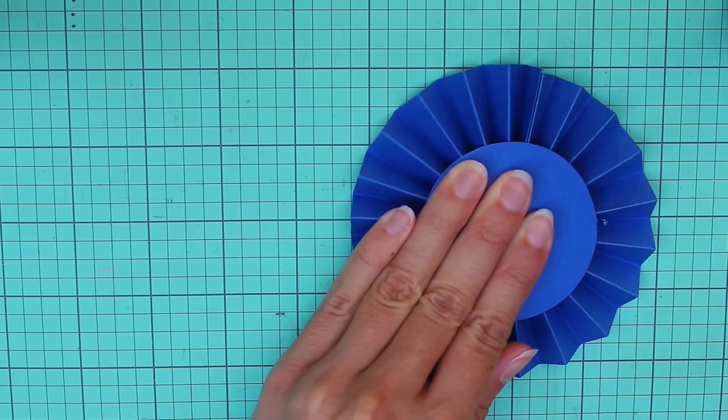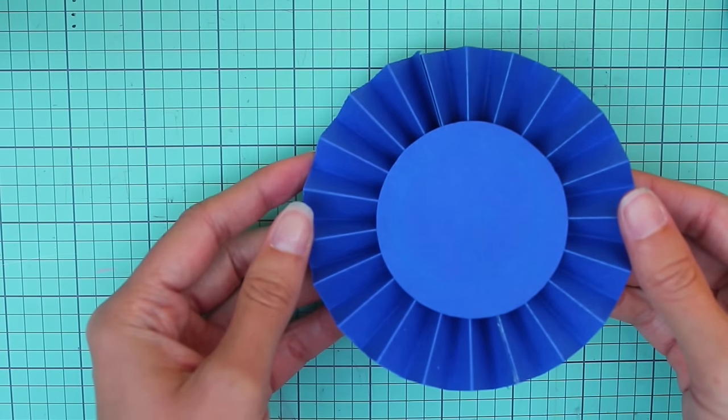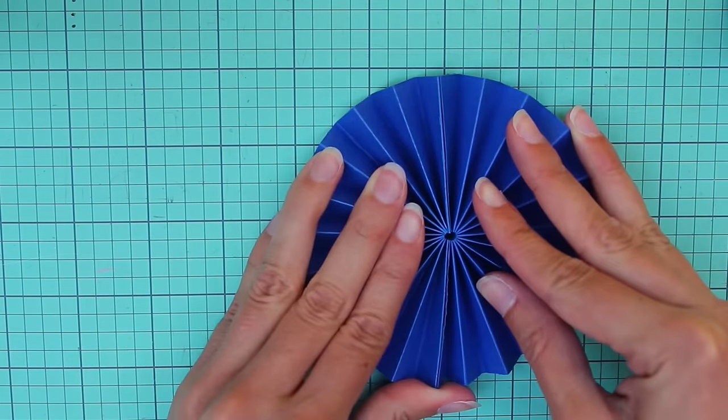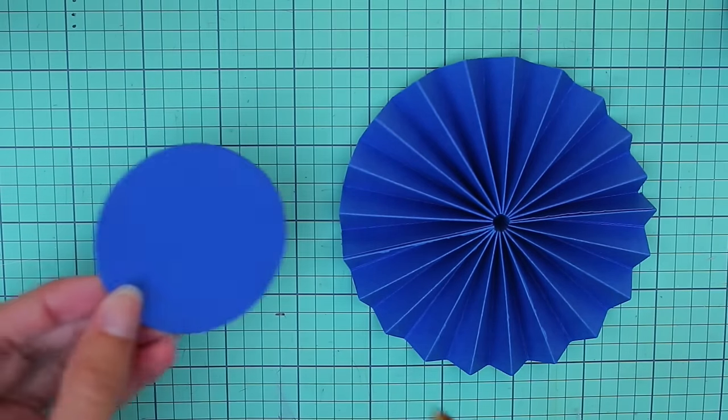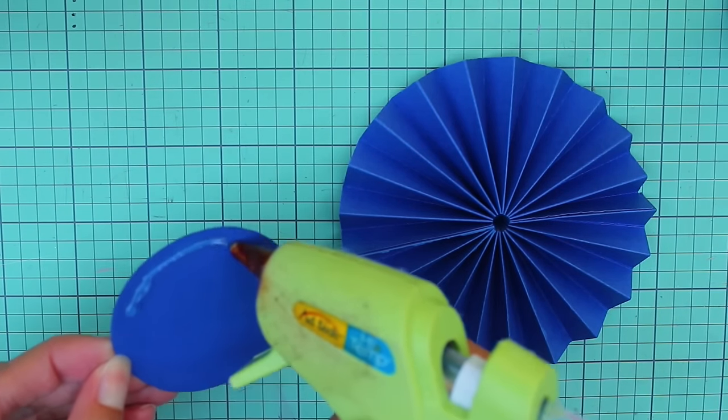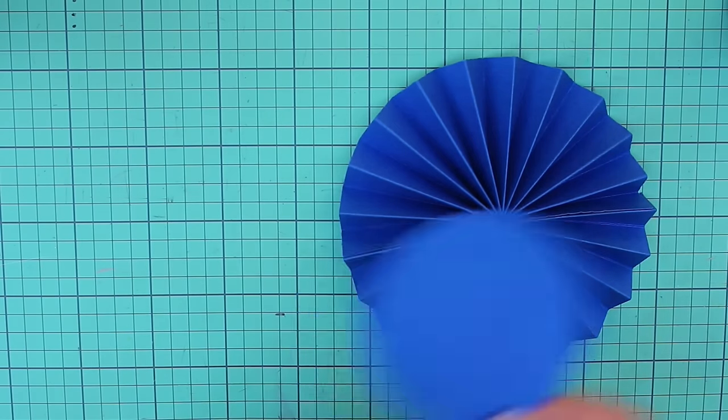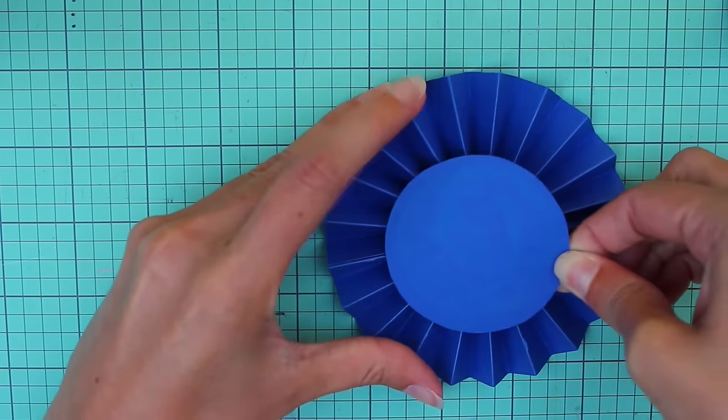So it should look like this on this side. Flip it over to the other side. Now we're going to be adding the other circle here. I'm going to be putting glue on this, and this will be the front side of the ribbon. So be careful as you place this circle to center it as well as you can.